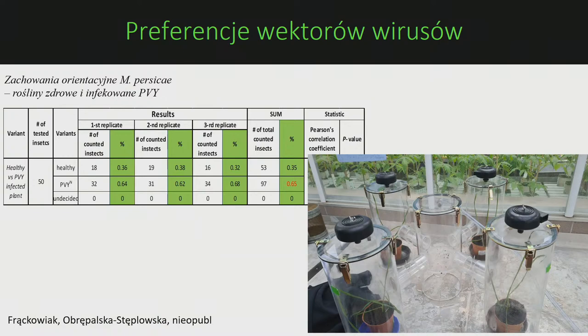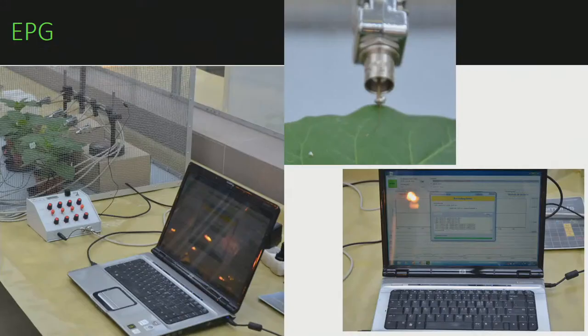Olfaktometr składa się z czterech komór – do dwóch wprowadza się rośliny zakażone wirusem, do dwóch zdrowe, a na środek wsadza się owady. Sprawdzamy, które rośliny wybiera owad. W naszym badaniu rośliny zarażone wirusem PVY były dwa razy bardziej atrakcyjne dla mszyc przenoszących tego wirusa niż rośliny zdrowe.